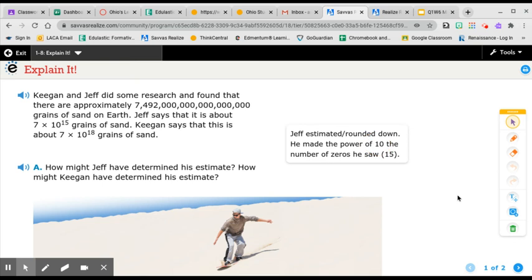I'll give you a minute to write that. Jeff estimated or rounded down to get the 7 from 7, 4, 9, 2. And he made the power of 10, that exponent on 10, the number of zeros he saw, which was 15.